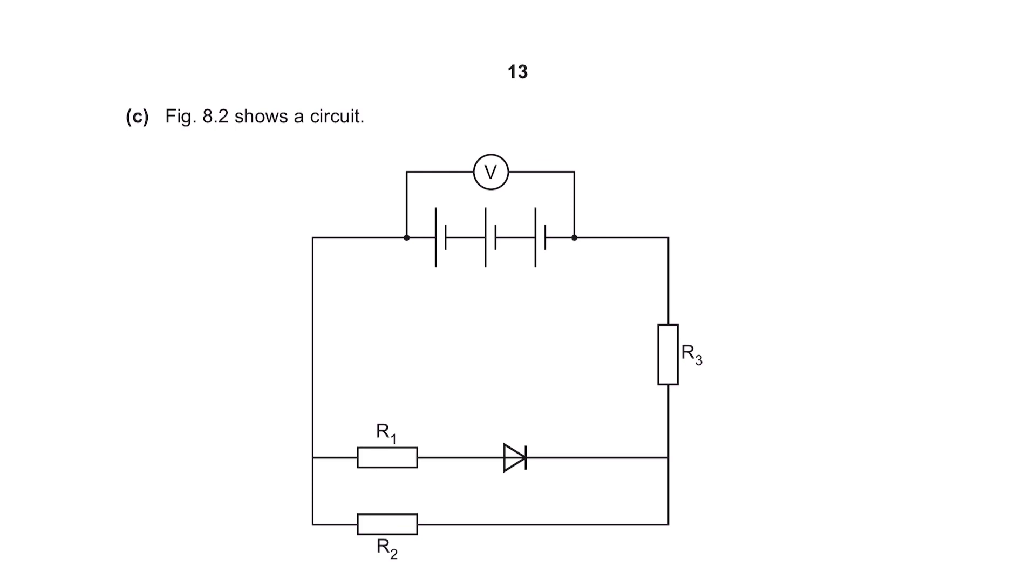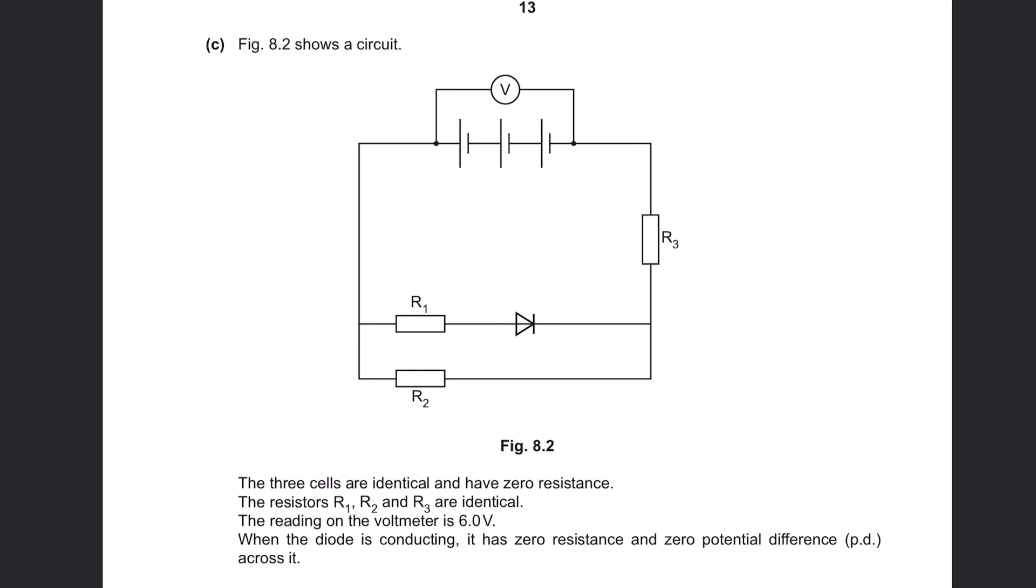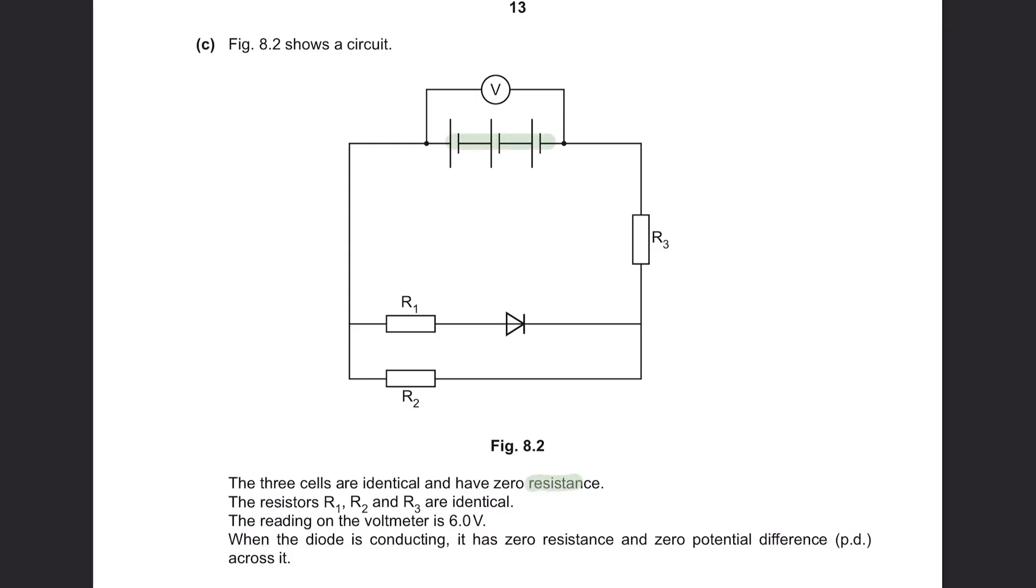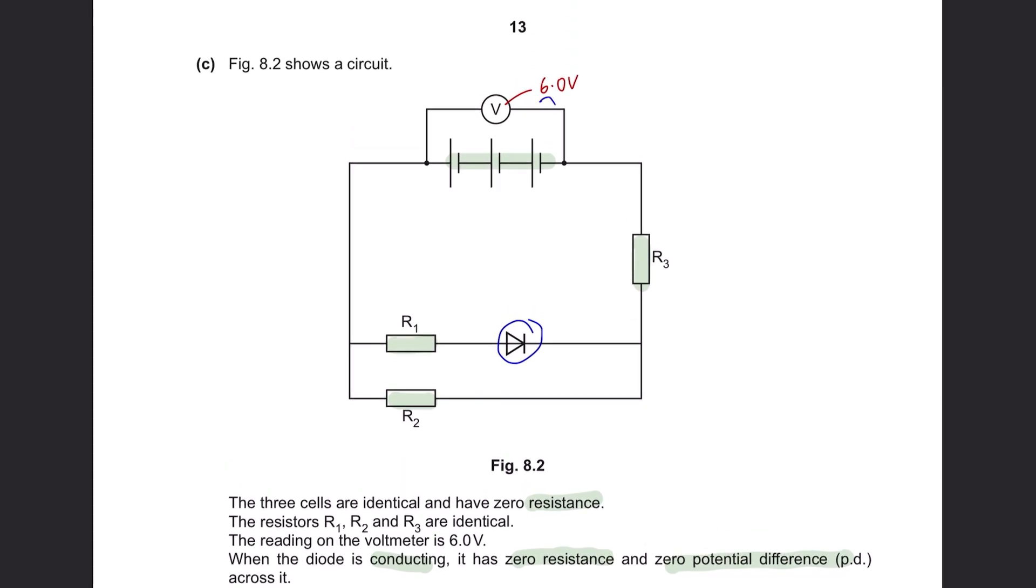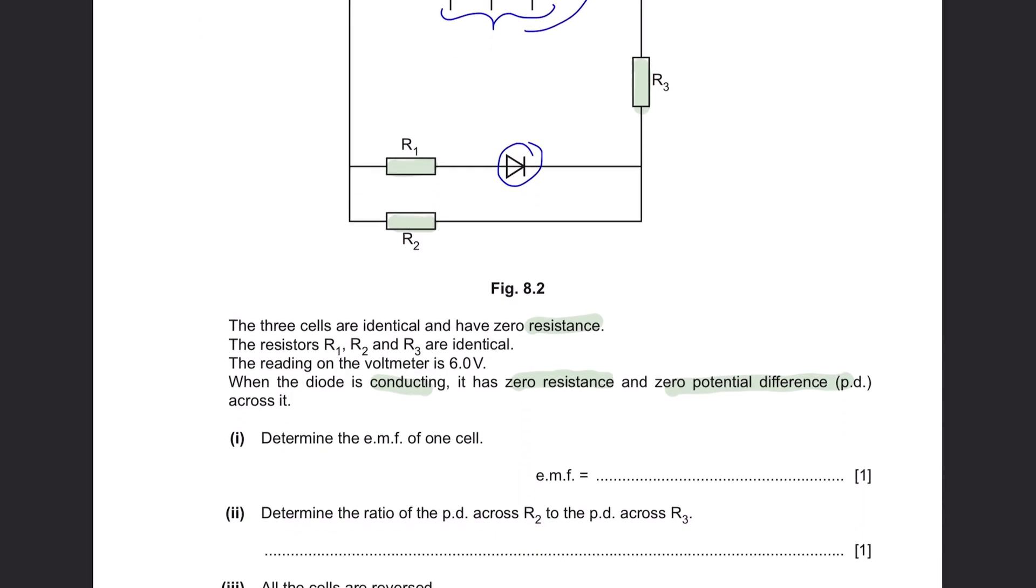Question C: Figure 8.2 shows a circuit. The three cells are identical and have zero resistance. The resistance R1, R2, and R3 are identical. The reading on the voltmeter is 6 volts. When the diode is conducting, it has zero resistance and zero potential difference across it. Here is your diode. Part 1: Determine the electromotive force of one cell. The electromotive force is your potential difference here, and for all three cells, it's mentioned is 6 volts. That means the electromotive force of one cell is 6 volts divided by 3 cells, giving us 2 volts for each cell.